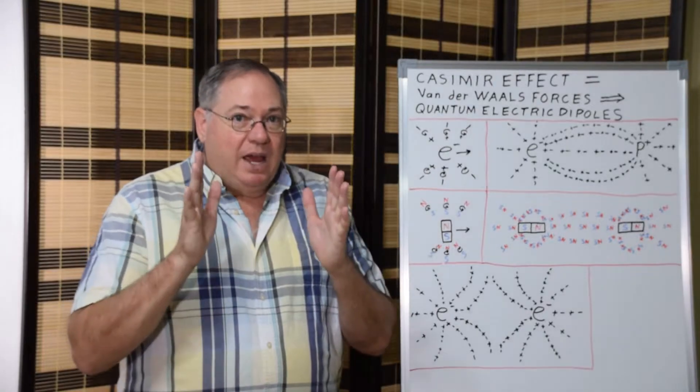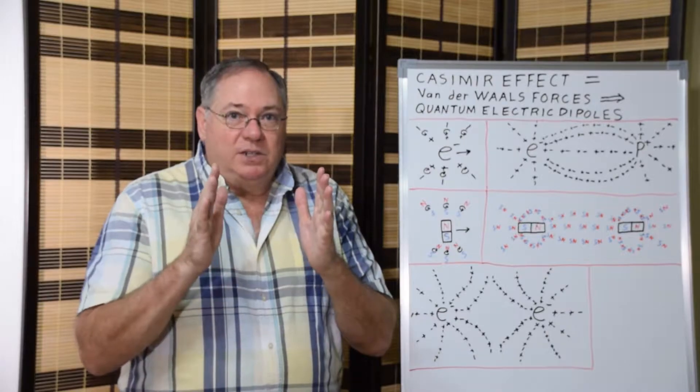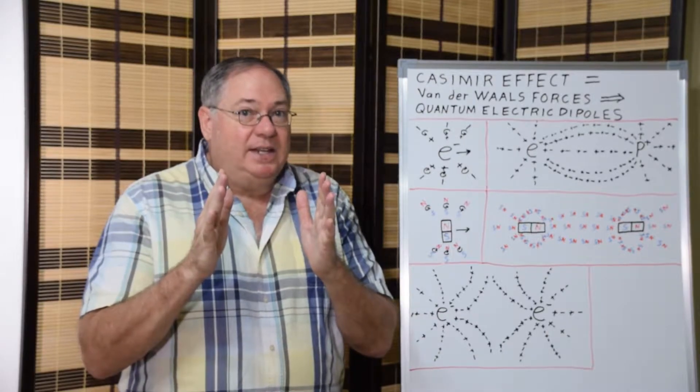With the Casimir effect, Casimir recognized that if you have two plates in space, that as they get closer, longer wavelength quantum fluctuations can't exist in that space.